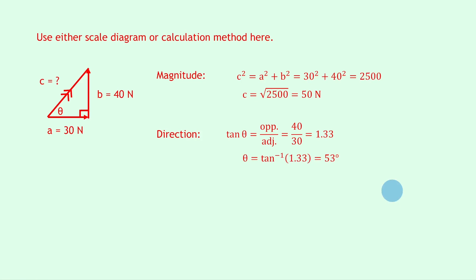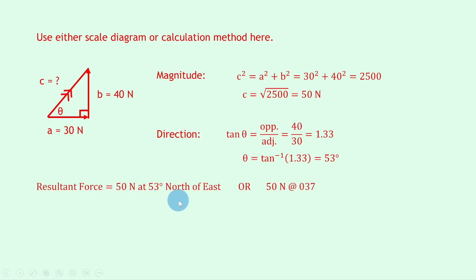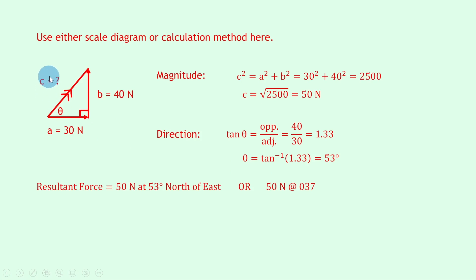So we can say the resultant force is equal to 50 newtons at 53 degrees north of east, or 50 newtons at a bearing of 037. For north of east: our resultant vector is 53 degrees around from east towards north, so it's 53 degrees north of east. For the bearing, we start at north (000) and go around to the resultant vector — that's 90 minus 53 — which gives us 037.